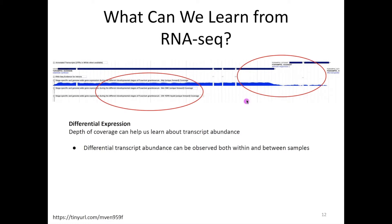The other thing we can learn is differential expression — how expression changes both within and between samples. If you focus on the top sample, the left-hand gene has fairly even and relatively high coverage, while the right-hand gene has much lower coverage. So the left-hand gene is transcribed more abundantly. If you compare the upper sample to the lower sample, that left-hand gene is quite abundant in the upper sample but not transcribed at all in the lower sample. This is basically what differential expression is: comparing genes and their abundance levels between samples.